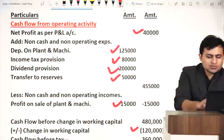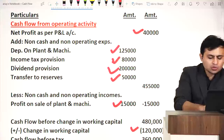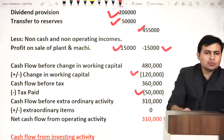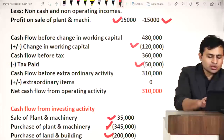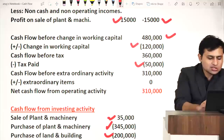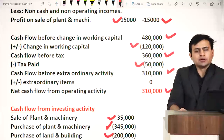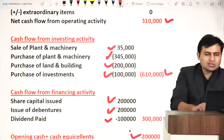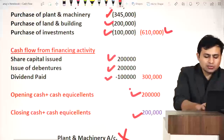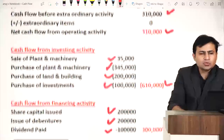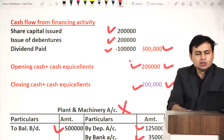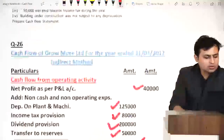Non-cash expenses total: 4 lakh 55,000. Income: negative 15,000. Net cash before working capital: 4 lakh 80,000. After working capital change and tax paid of 50,000, operating activity cash flow is 3 lakh 10,000. Investing activity outflow is 6 lakh 10,000. Financing activity is positive 3 lakh. Adding opening cash, closing balance comes to 2 lakhs. That's it for question number 26.